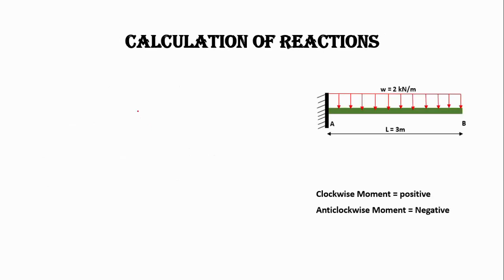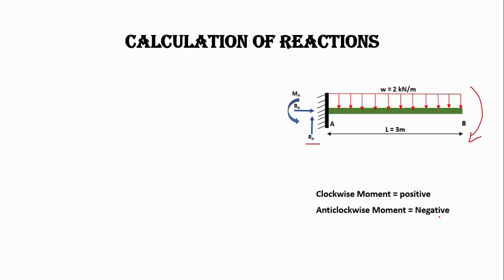Let's start the calculation of reaction forces. At the fixed support we have three support reactions: one is the vertical force Ra, one is the horizontal force Rx, and one is the moment Ma. The load acting on the beam will bend the beam in the clockwise direction, and that's why this support reaction will be considered as anti-clockwise.